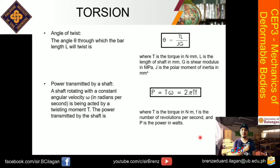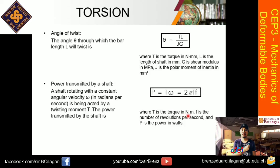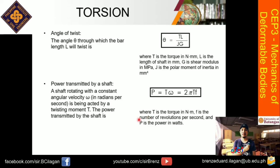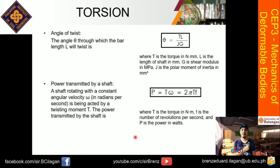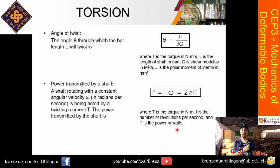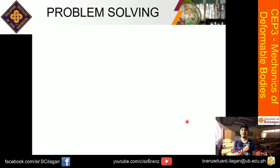T is torque normally in newton-meters, f is the number of revolutions per second, and P is power in watts. For units of power: we have horsepower, watts, and kilowatts. Note that watts equals joules per second, and joules equals newton-meters — which is also the unit of torque. So don't get confused; please review those units. With that, let's proceed to solve problems for this topic.